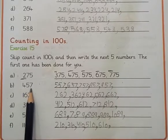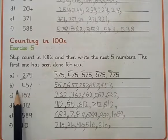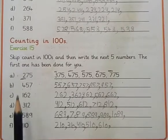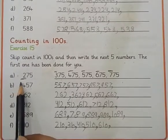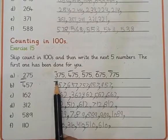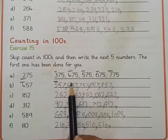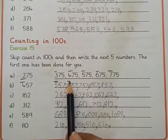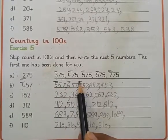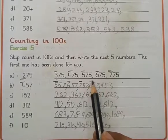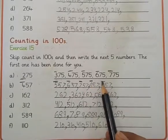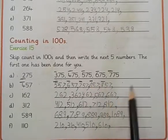The second example is 457. Add 100 and the first number will be changed: 557, 657, 757, 857, and then 957.